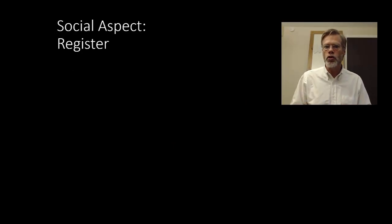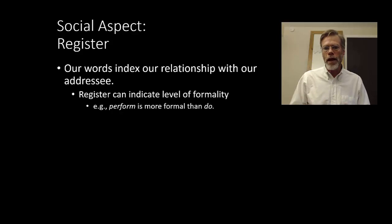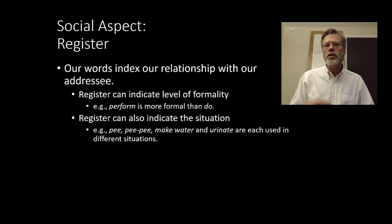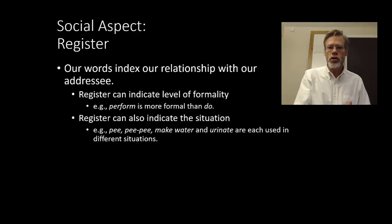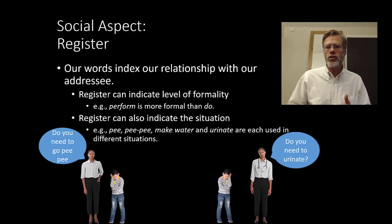Another aspect of social meaning is register — this has to do with the level of formality. Our words index our relationship with our addressee. When you're writing an academic paper, the expectation is that it's formal, and we should signal that with our words — choosing more formal words like 'perform' rather than an informal word like 'do.' Register also indicates a situation: certain situations call for certain words. For example, 'PP' is highly restricted to conversations involving children, while 'urinate' tends to appear in clinical situations like a classroom or a doctor's office.